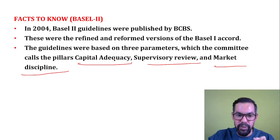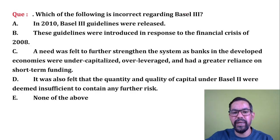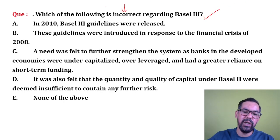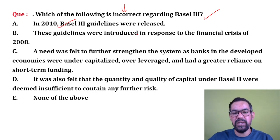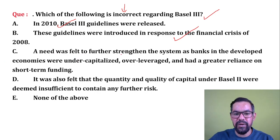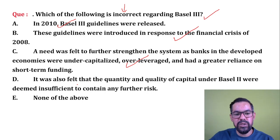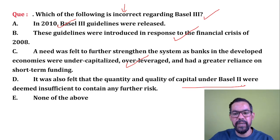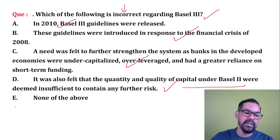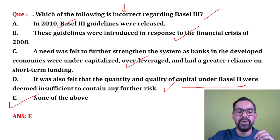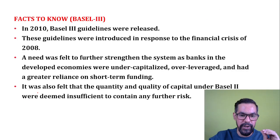Next question: which of the following is incorrect regarding Basel 3? Basel 3 was introduced in 2010 — correct. These guidelines were introduced in response to the financial crisis — correct. A need was felt to further strengthen banks in developed economies — correct. It was also felt that the quantity and quality of capital under Basel 2 were deemed insufficient — correct. So all statements are correct, and none of the above is the correct answer.